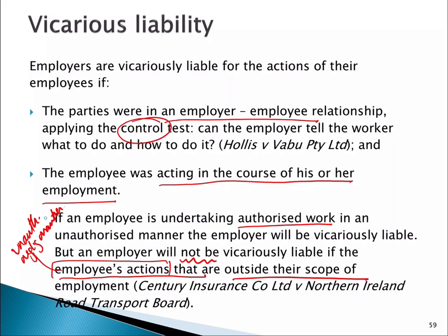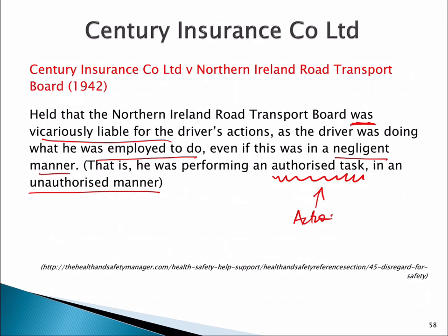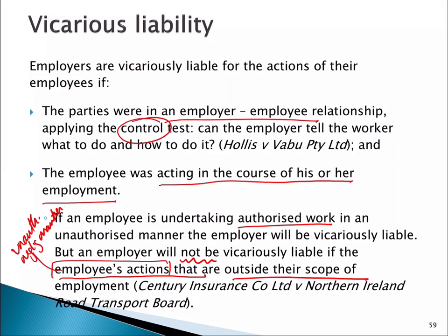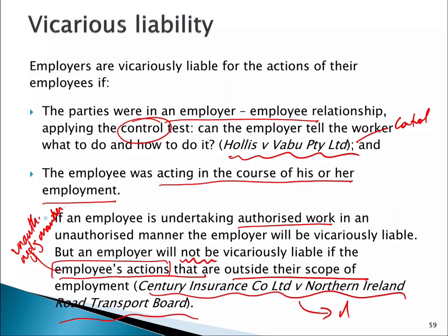To summarise simply: employers are vicariously liable if they have sufficient control, and if the behaviour is within the normal tasks required of the role, even if the execution is done negligently or in an unauthorised manner. The employer won't be liable if the task undertaken is outside the normal role of the job. Remember the two cases: Hollis and Vaboo Limited — about control in the employment relationship — and Century Insurance and Northern Ireland Road Transport — about the scope of liability as being authorised actions, even if done in an unauthorised manner.